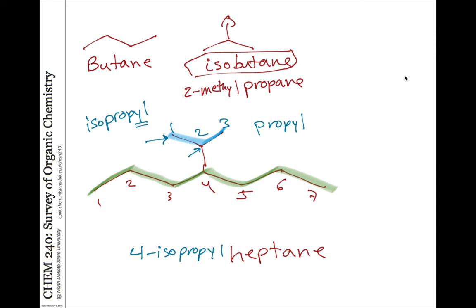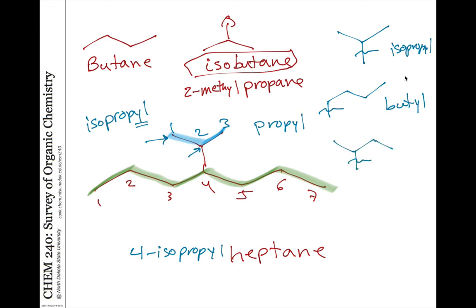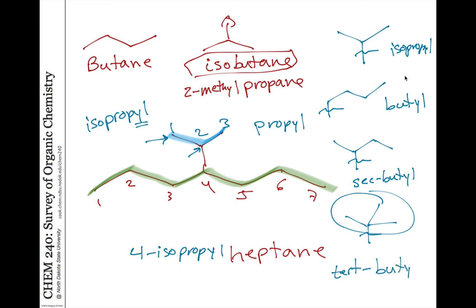You should be aware of some of the common names. You can have a normal butyl where it's attached at the end of a butyl group. But if it's attached at the next carbon — so we have four carbons and it's attached at the second position — we often refer to this as a secondary butyl because it's attached to a secondary carbon. And if it's a branched isomer of the butyl where the four-carbon group is branched and attached to a larger chain there, we would refer to this as a tertiary butyl because it's attached to a tertiary carbon.